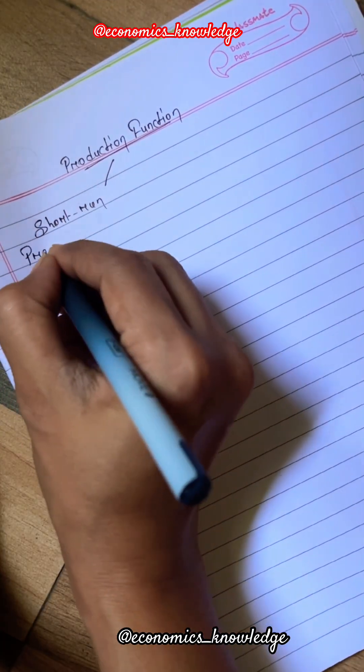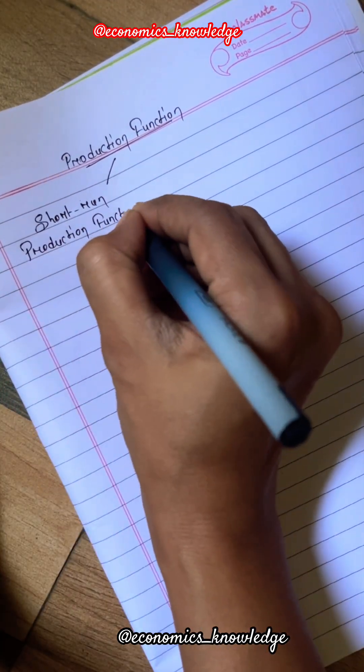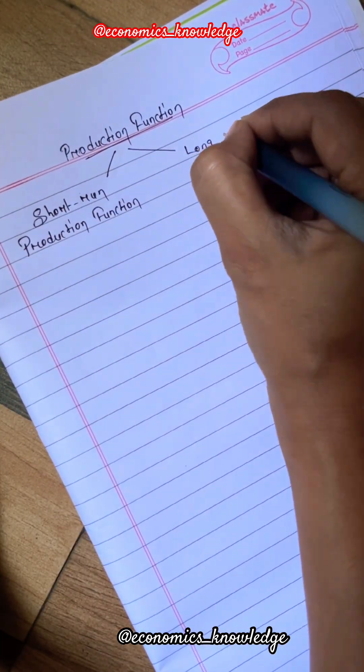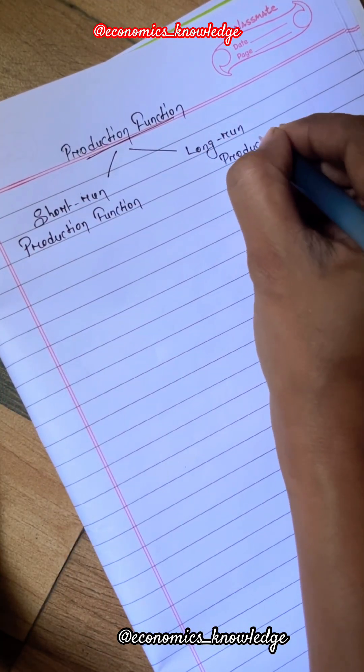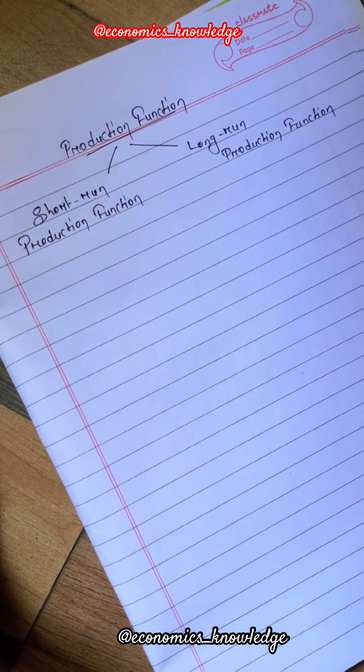There are two types of production function: number one, short run production function, and number two, long run production function.